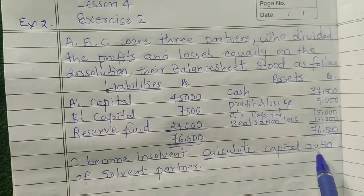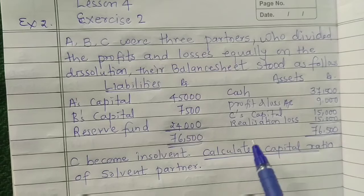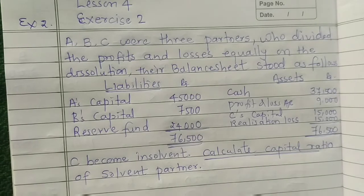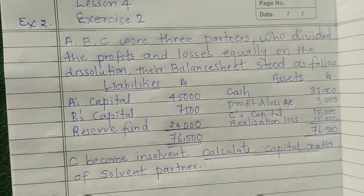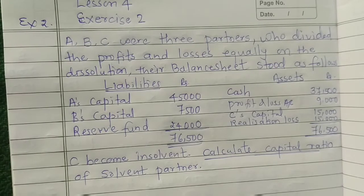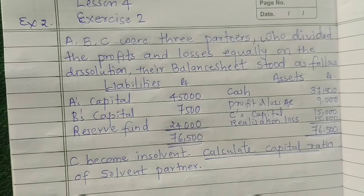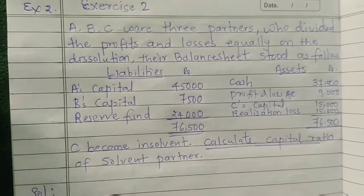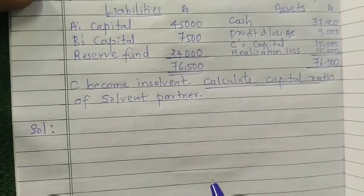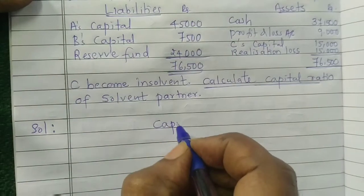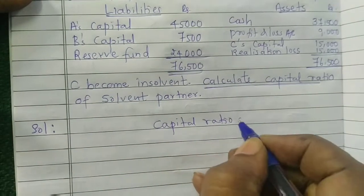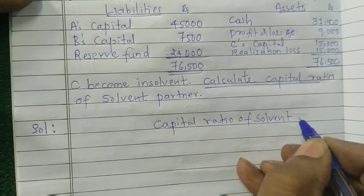C has become insolvent. We are asked to calculate the capital ratio of solvent partners. In your examination, this kind of problem is asked as a five-mark question. To ascertain the capital standing ratio — also known as the last agreed capital ratio in case of fluctuating capital — let us see the format for solvent partners' capital ratio.